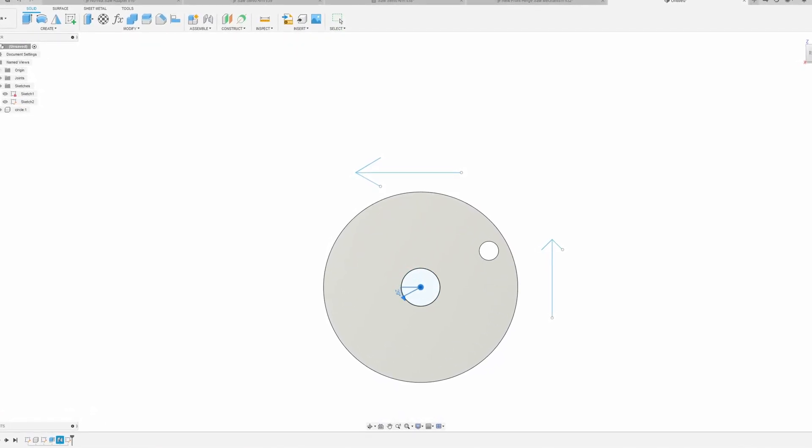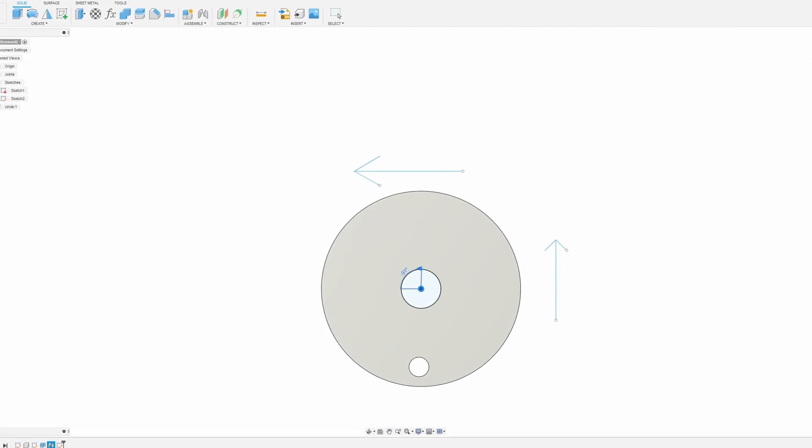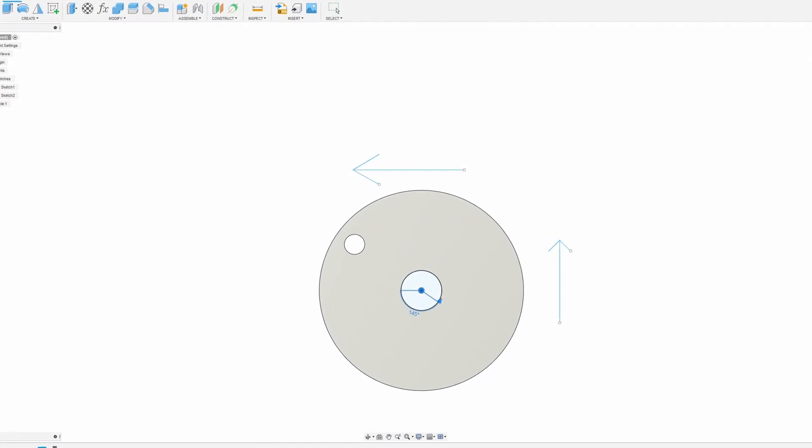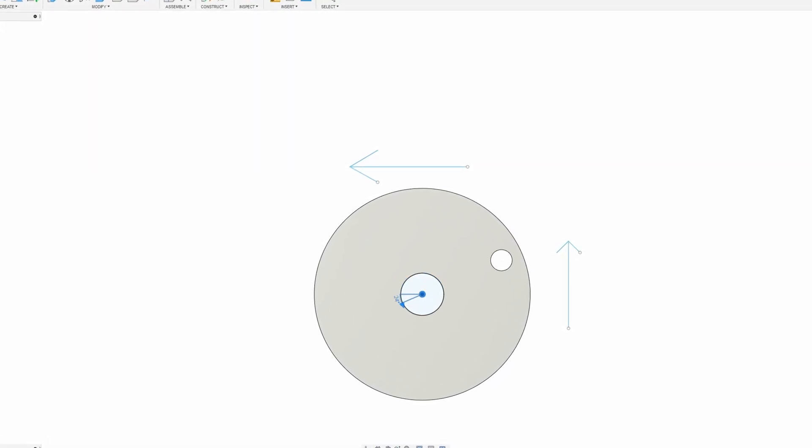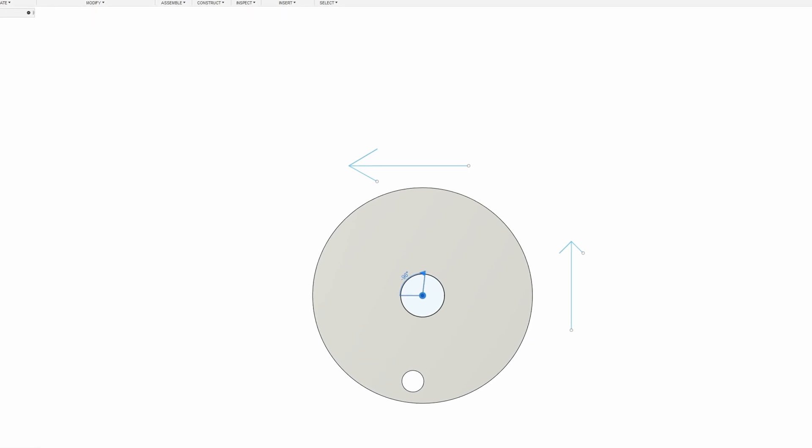One concept we all know from geometry and trigonometry is how a point on a circle moves as the circle rotates. Draw a point on any rotating circle, and you'll see that when the point moves to the left side or the right side, it's mostly moving up and down, but when it's at the top or the bottom of the circle, it's mostly moving left or right.